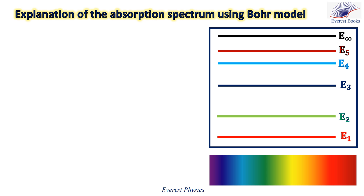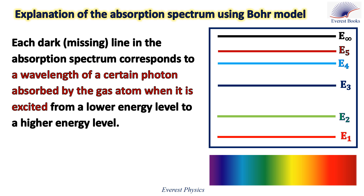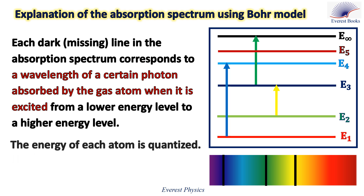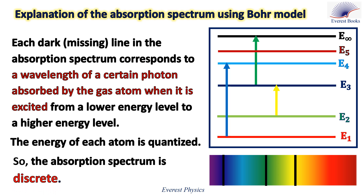This is the energy level diagram of a hypothetical atom. Each dark or missing line in the absorption spectrum corresponds to a wavelength of a certain photon absorbed by the gas atom when it is excited from a lower energy level to a higher energy level. For example, when a photon of energy exactly equal to E4 minus E1 hits this atom, the photon is absorbed and the atom makes an upward transition from E1 to E4. Similarly, a photon of energy equal to E3 minus E1 causes a transition from E1 to E3, and a photon equal to E3 minus E2 excites the atom from E2 to E3. Since the energy of each atom is quantized, the absorption spectrum is discrete.